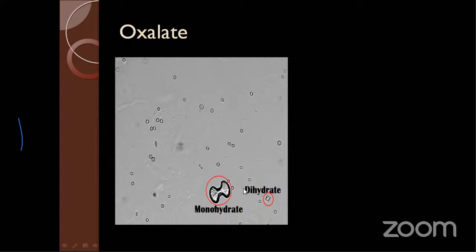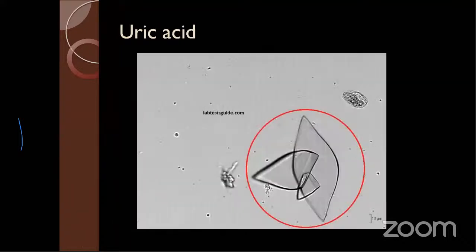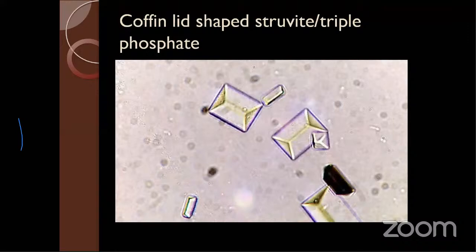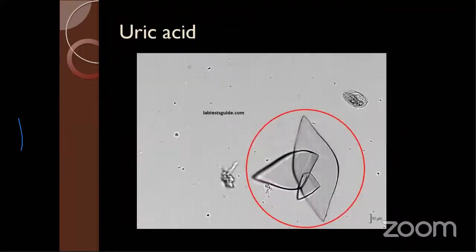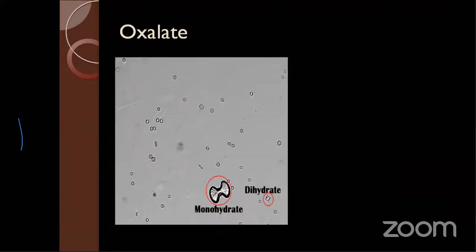To summarize crystal shapes: coffin-lid shaped — triple phosphate calculi; rosette — uric acid calculi; dumbbell or hourglass — calcium oxalate monohydrate; envelope-shaped — calcium oxalate dihydrate.